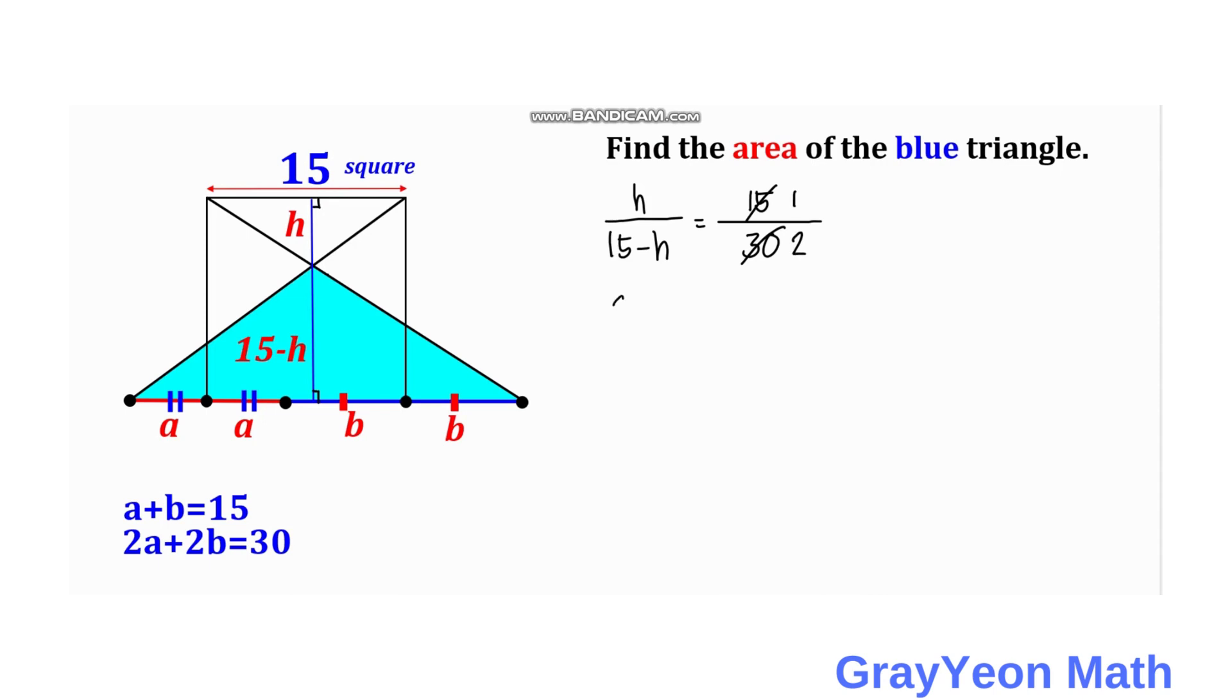we have 2H is equal to 15 minus H. So if we try to put this negative H to the left-hand side, we have 3H is equal to 15.